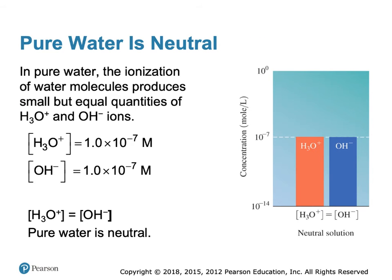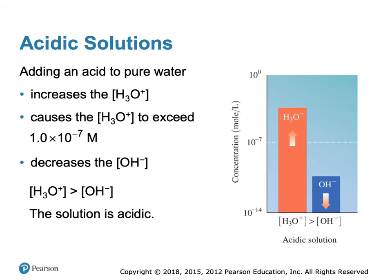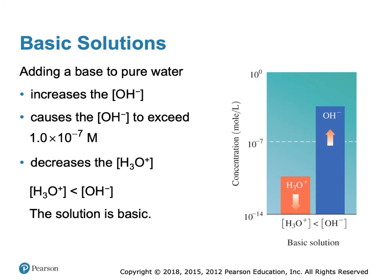Looking at this graphically: if the concentration of the two ions is equal at 10⁻⁷, we have a neutral solution. If the concentration of H₃O⁺ is more than the concentration of hydroxide, we have an acidic solution — the product of the two is always 10⁻¹⁴. If the hydrogen ion concentration is between 10⁻⁷ and 10⁰, the solution is acidic. For a basic solution, the OH⁻ concentration exceeds the hydronium ion concentration — if the hydroxide concentration is greater than 10⁻⁷, you have a basic solution.